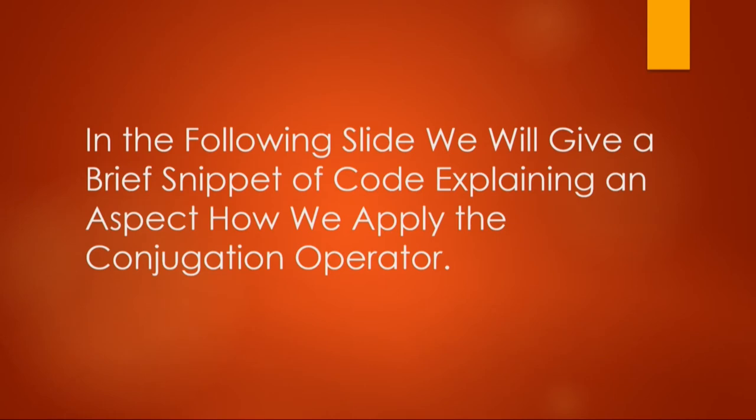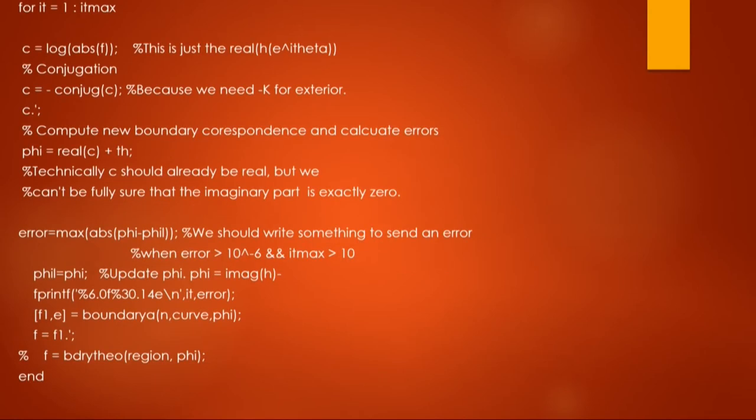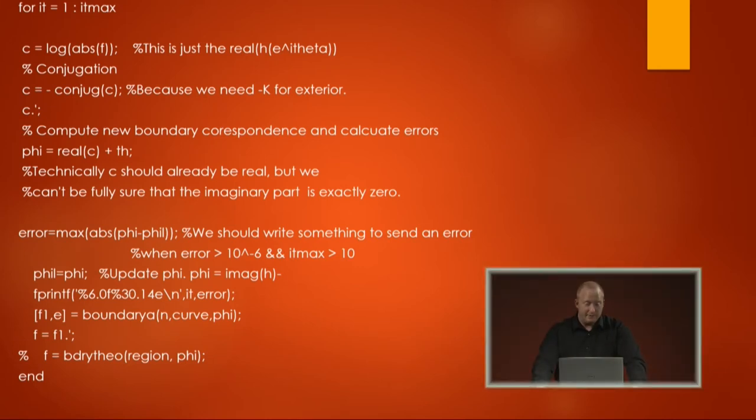Here's just a little bit of code for the conjugation operator. If you look here, we have some function c and then we let c be the conjugate of c right in the next line. And then we obtain an approximation of phi. First, we assume that phi is equal to theta. But as you can see here, phi, when you iterate it, is now equal to the real part of c plus theta. You do this over and over again until you get an error that is acceptable.